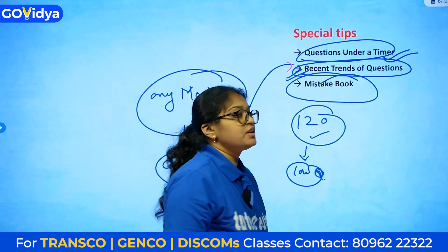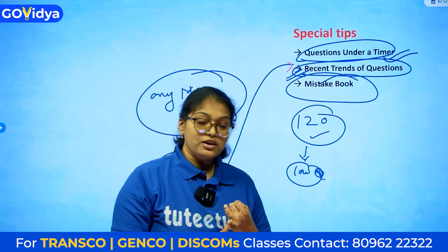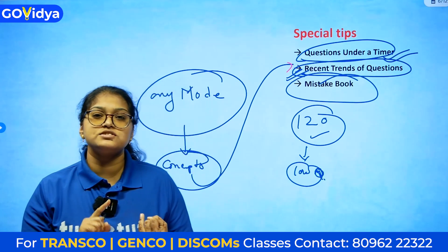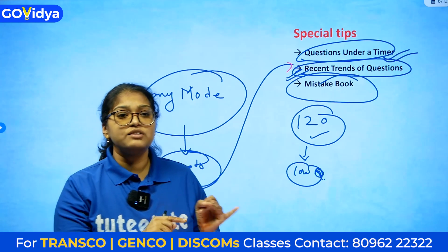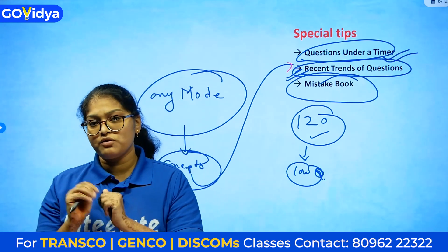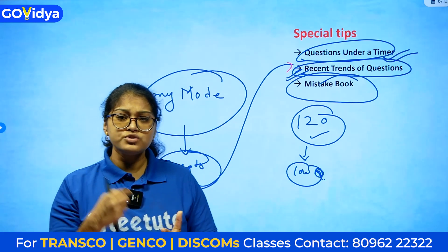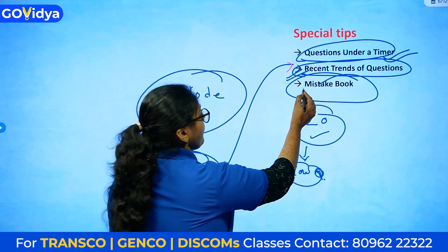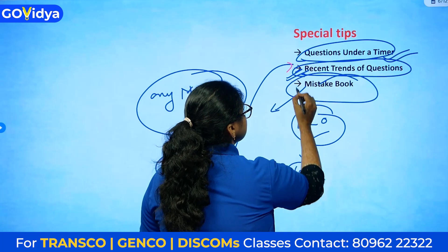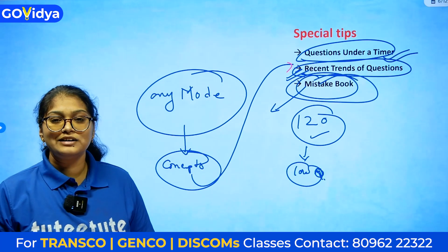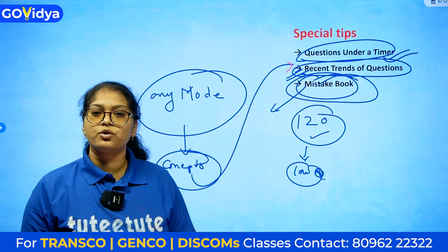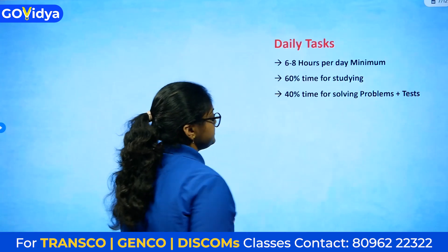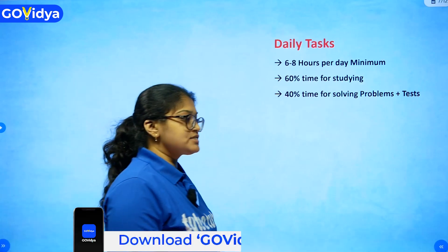Third: maintain a mistake book. After clearing concepts and writing mock tests, you will know your strengths and weaknesses — which areas you are strong in and which you are weak in. Note down all the mistakes you make in a mistake book. This will be very useful for targeted revision.